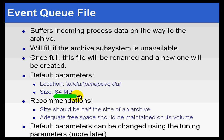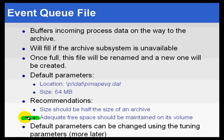During the installation, we got to choose the size of the Event Queue file, and we chose the default, which was 64 megabytes. The recommendation is to make this half the size of an Archive. Since the only limitation to its utility is the amount of free space on that disk drive, we suggest you keep adequate free space to handle, for example, an Archive process that stops on a Friday afternoon and doesn't get tended to until Tuesday after a three-day weekend — enough to account for a worst-case scenario.